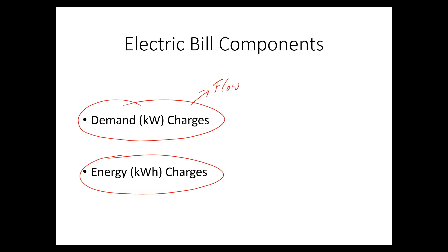Another way to think about these two things is via an analogy with water. Electricity flows a lot like water. If you were to fill up a swimming pool, whether you filled it with a garden hose or a 25-inch pipe, the volume of water in the pool would be the same. But if you use the 20-inch pipe, you would have a lot greater flow — you would need more pumps and the pipes are expensive.